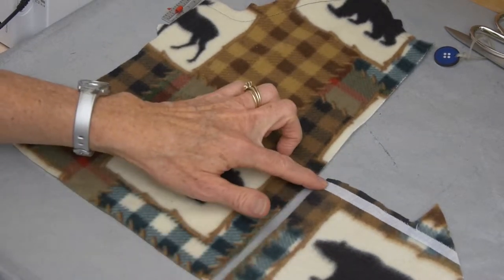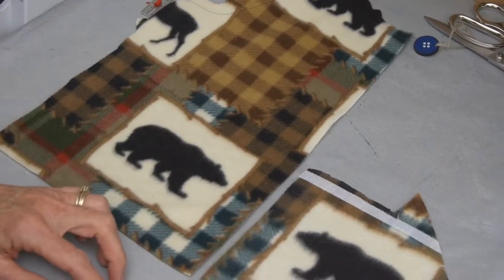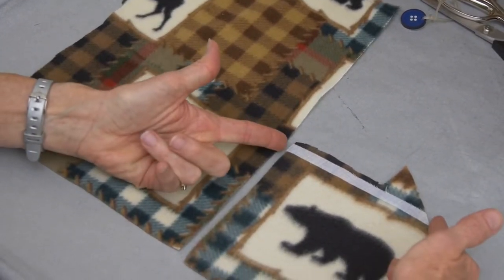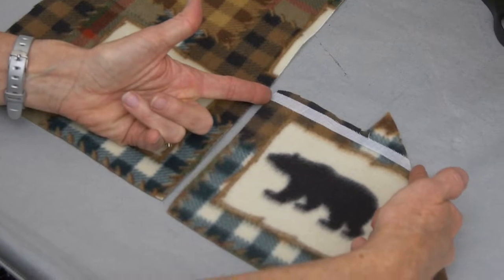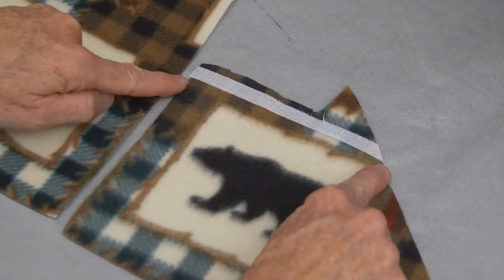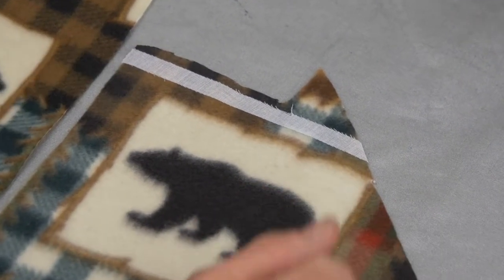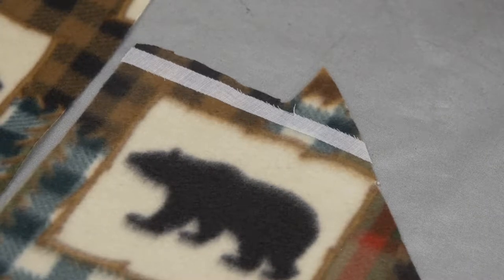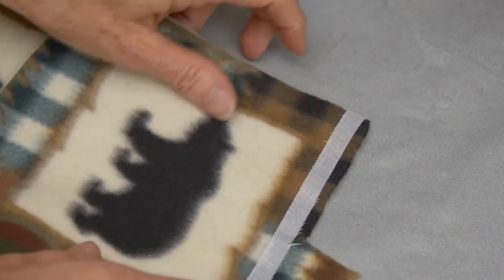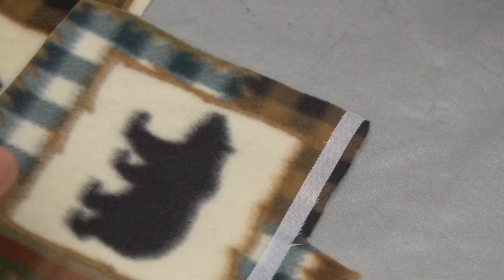So we're going to put on this fusible stay tape. You'll pull out your pattern and cut the stay tape the length of your pattern piece, not your fabric, because your fabric may have already been pulled and stretched a little bit. So pull out your pattern piece, cut that, and then the stay tape aligns.